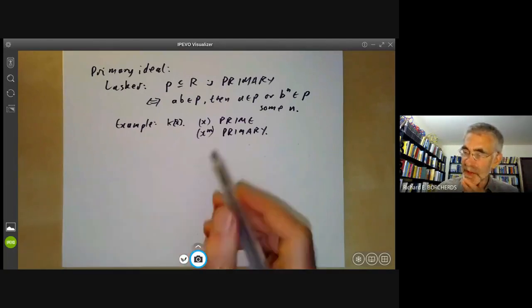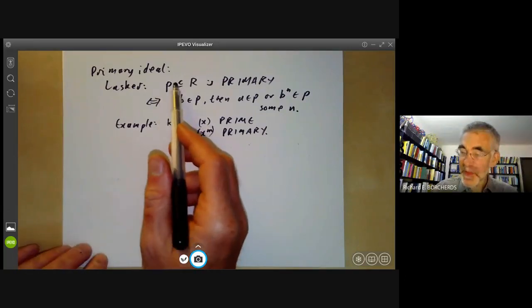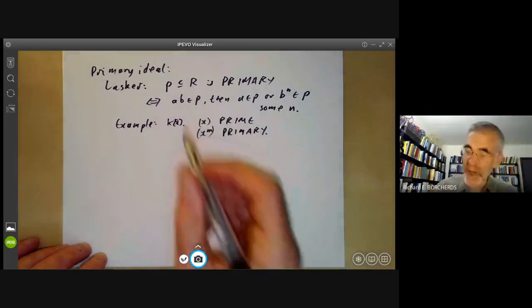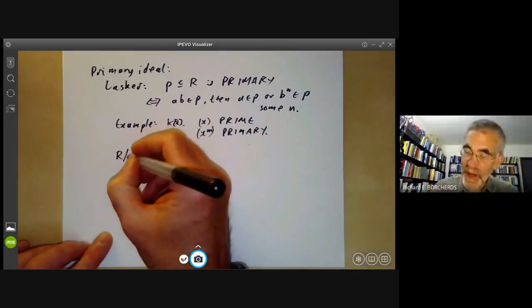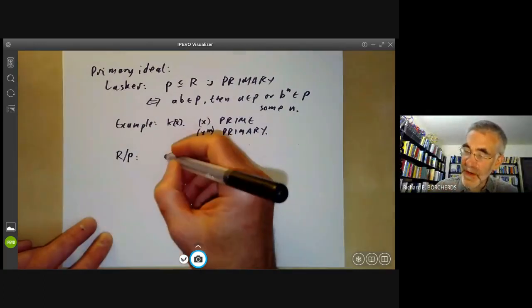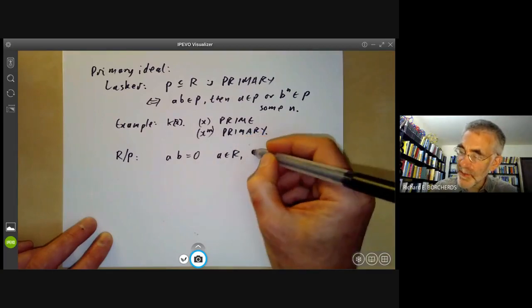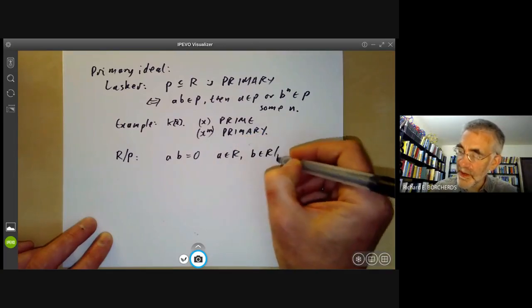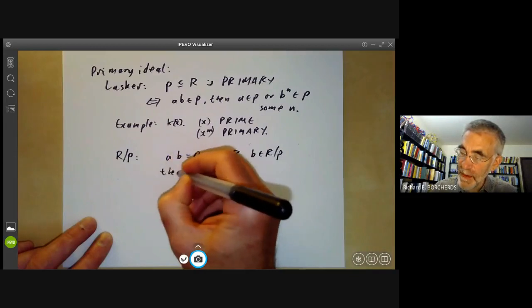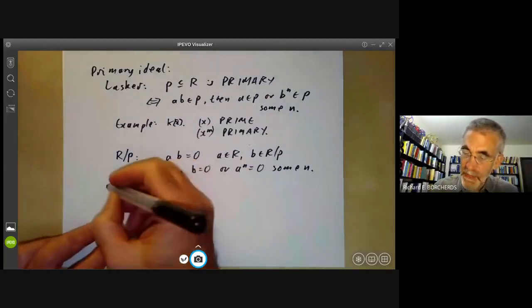It turns out to be sometimes better to focus not on the ideal p but on the module R/p. So R/p has the property that if a·b equals naught with a in R and b in R/p, then b equals zero or a^n equals zero, and this works for any module over R.